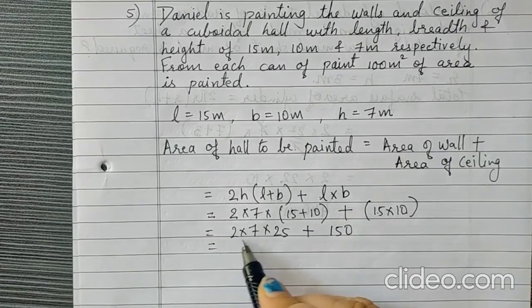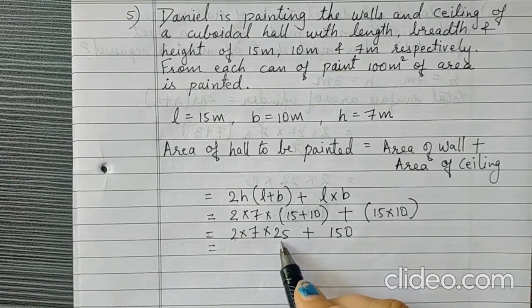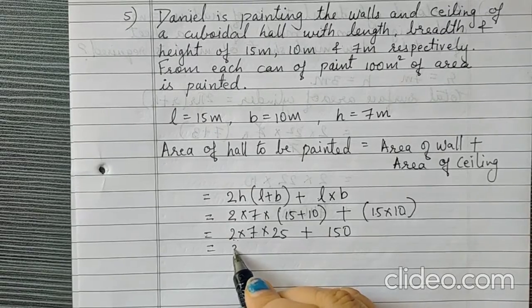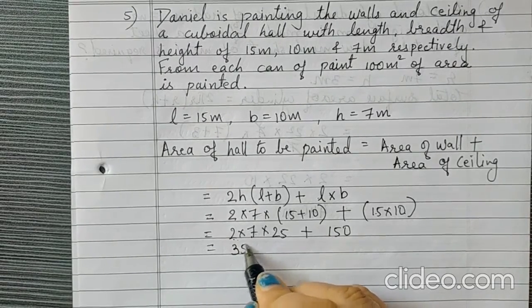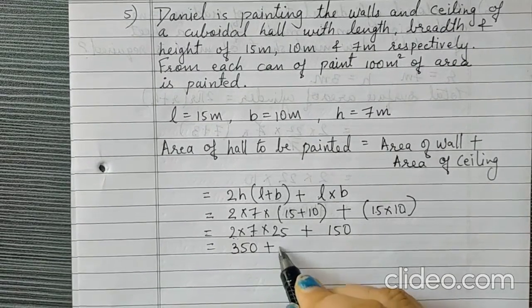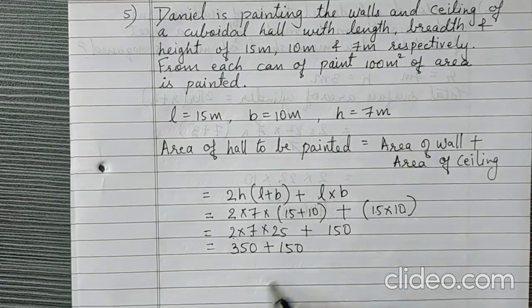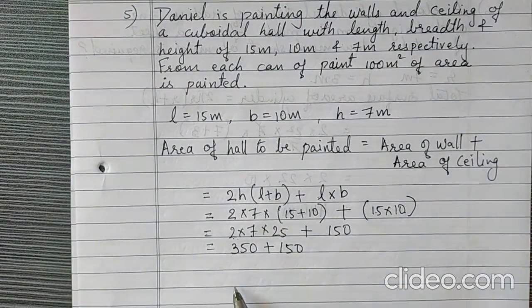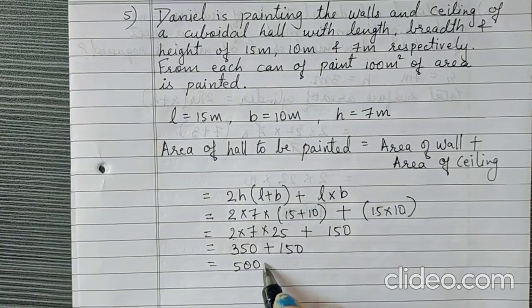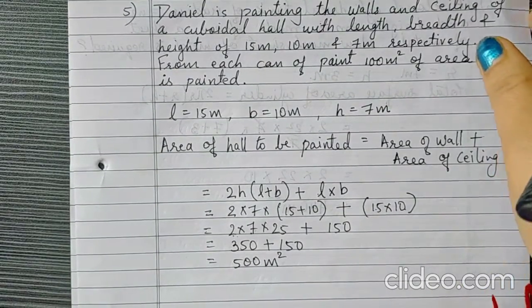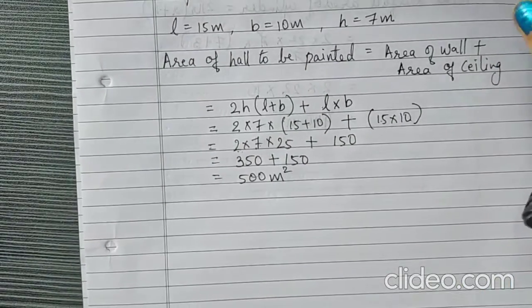What is this? 2 into 7 into 25. That is 50. 7 times 50 is 350 plus 150. So, that will be 500 meter square. So, this much area is to be painted.